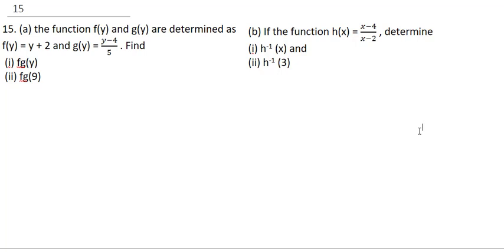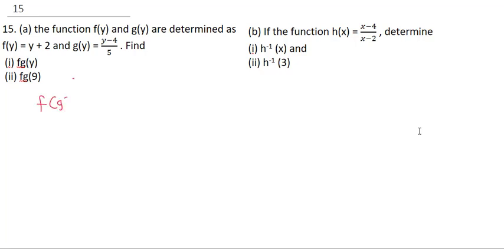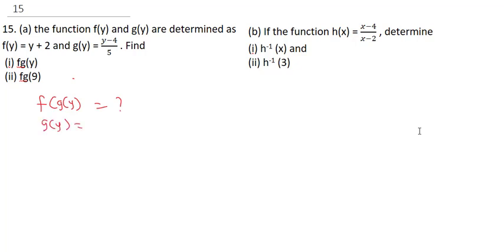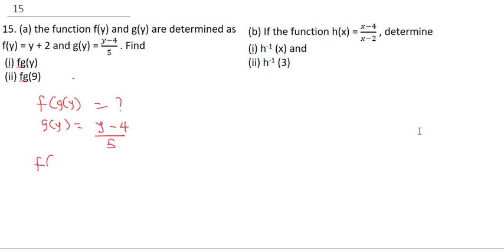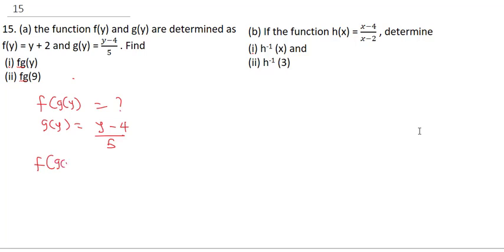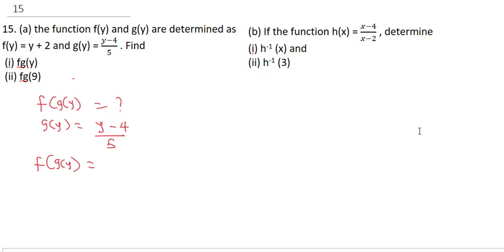Find: (i) f of g of y, and (ii) f of g of 9. Now, in order to solve for f of g of y, we are given that g of y is y minus 4 all over 5. Therefore, for us to find f of g of y, we will take this function and put it in as y.